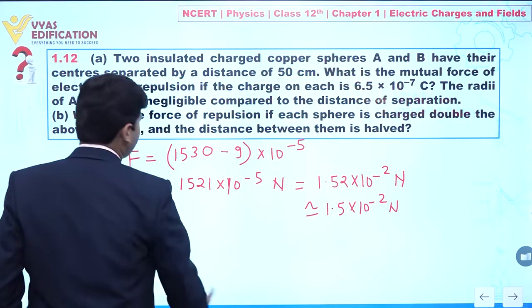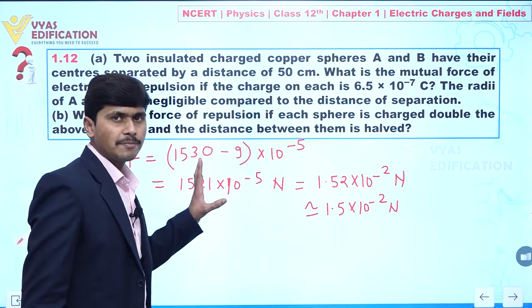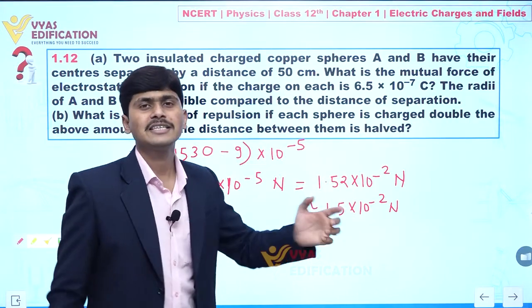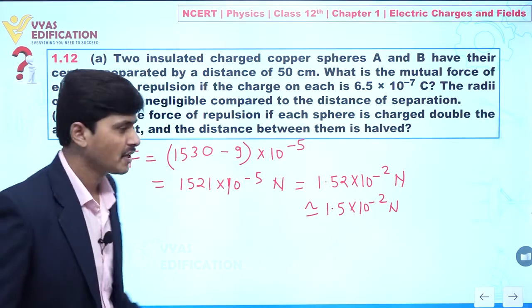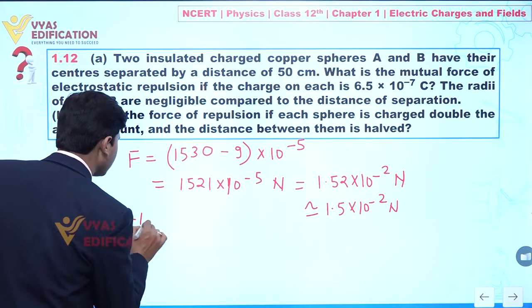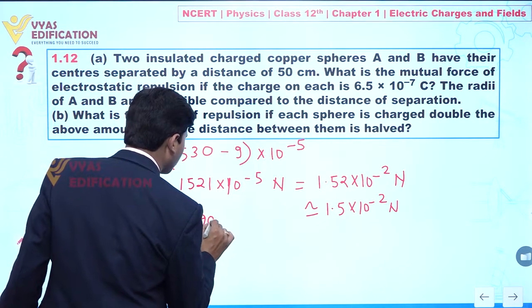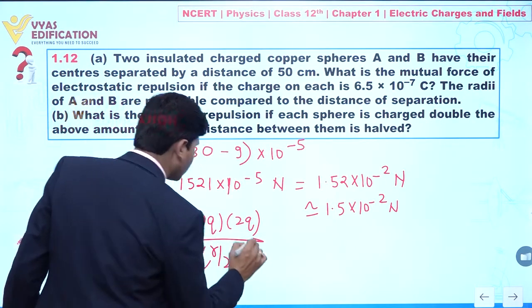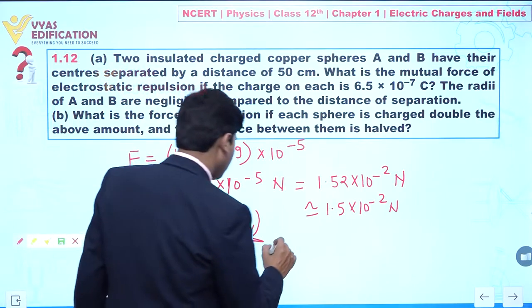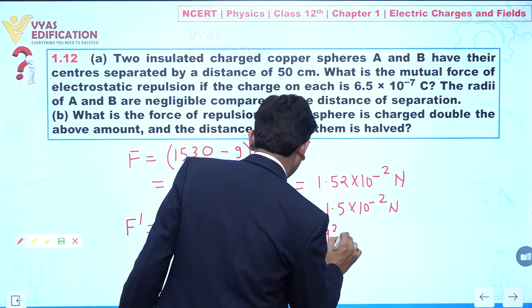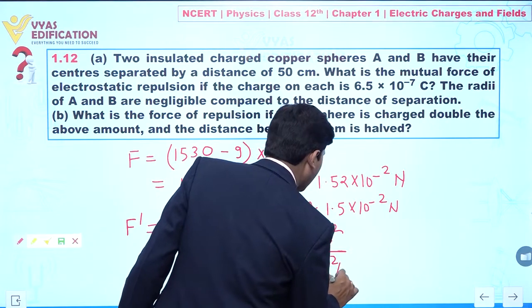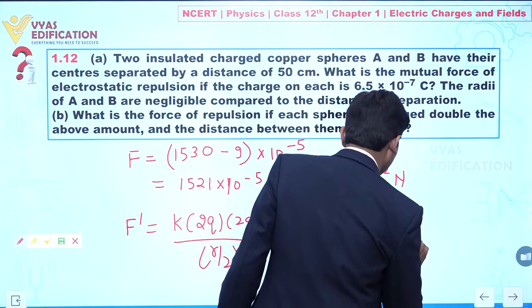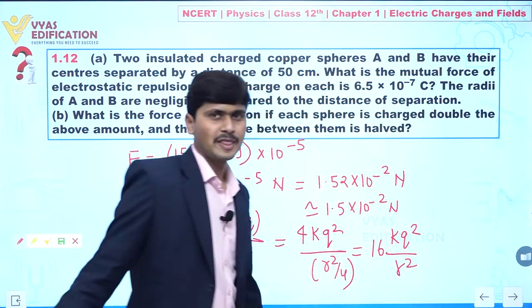For part B, the charge on each sphere is doubled and the distance between them becomes half. So F' = k·(2q)·(2q) / (r/2)². This equals 4kq² divided by r²/4, which gives 16kq²/r².